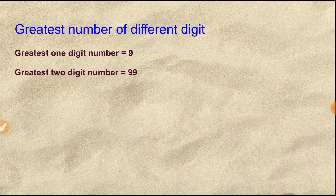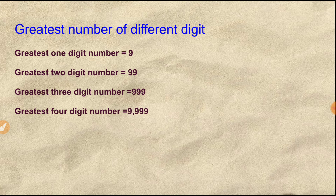The greatest 1-digit number is 9. The greatest 2-digit number is 99. The greatest 3-digit number is 999. The greatest 4-digit number is 9999.